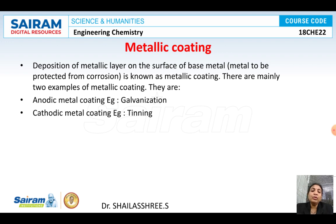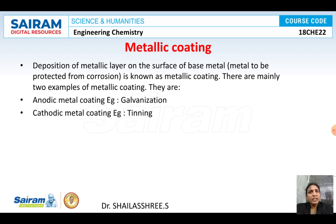Anodic metal coating means if you coat iron — the base metal — with any metals which are present above it in the electrochemical series, that is called anodic metal coating, because all those metals above it in the electrochemical series are anodic to the base metal iron. Conversely, if you coat iron with any metals present below it in the electrochemical series, those metals are cathodic to iron, and it is called cathodic metal coating.